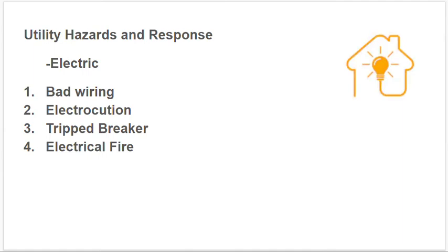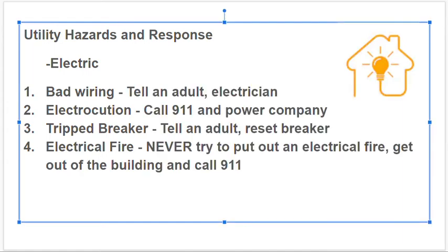Some hazards of an electric utility are bad wiring, electrocution, tripped breaker, or electrical fire. When there's bad wiring, tell an adult — they'll need to call an electrician. You should stay away from the area where the bad wiring is, and probably not even be in that room or that building.